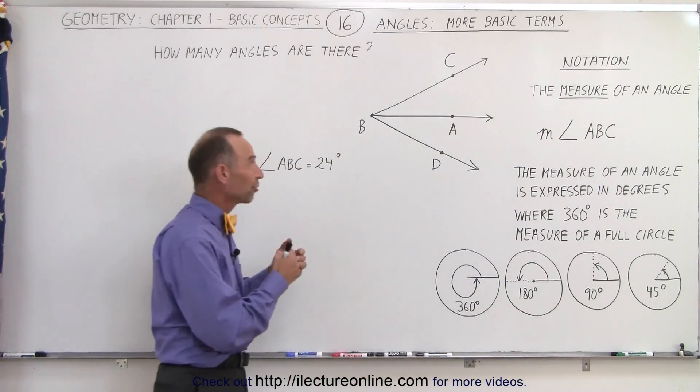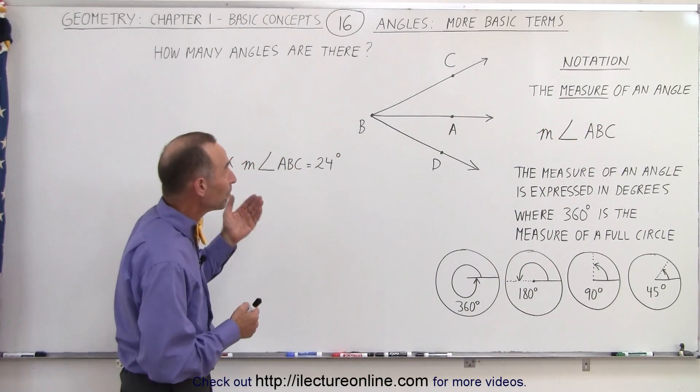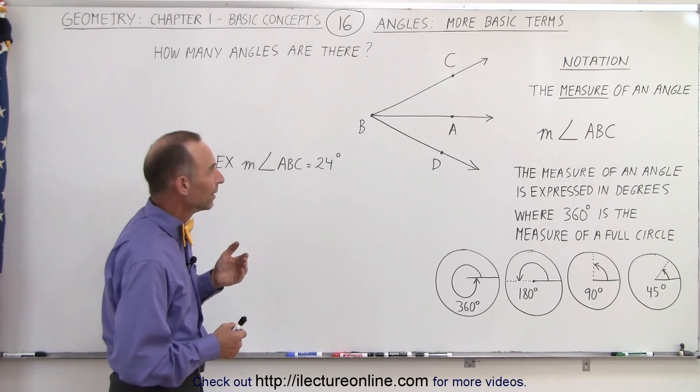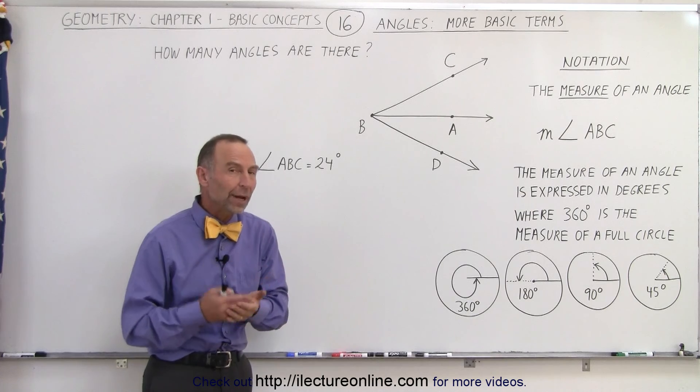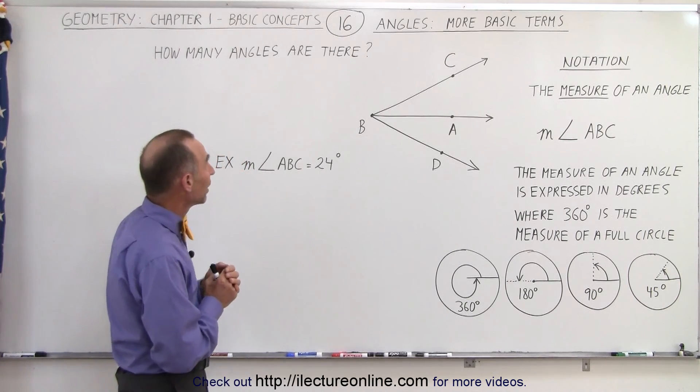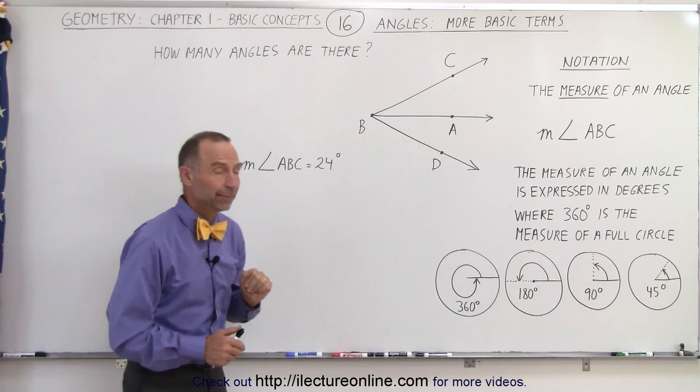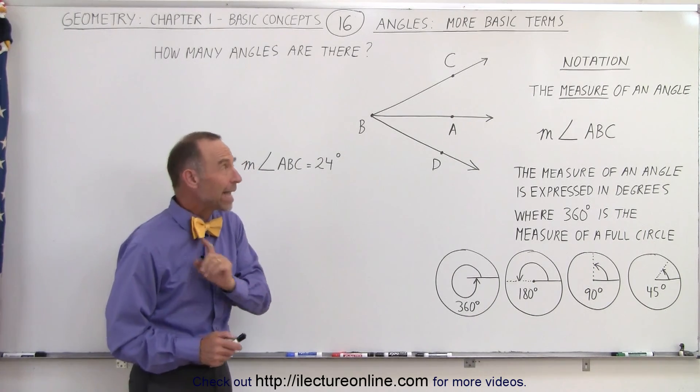Now here we have drawn three rays: ray BC, ray BA, and ray BD. You can see that all three rays have the common endpoint B. The question that may be asked is, how many angles are there? It turns out there are three angles.